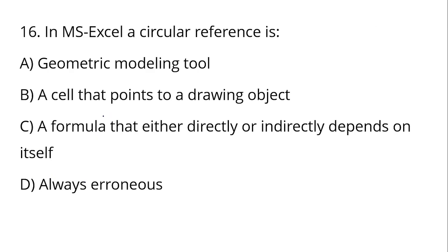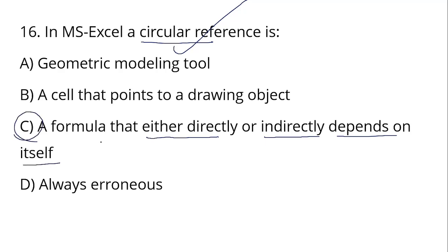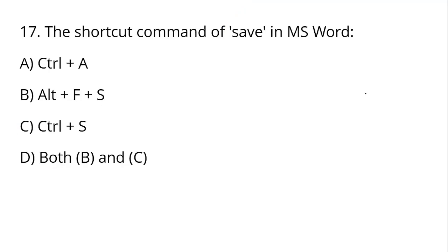In MS Excel, a circular reference is when a formula either directly or indirectly depends on itself. Option C is the correct answer. The shortcut command to save in MS Word is Ctrl+S, and Option C is the correct answer.